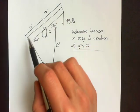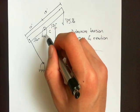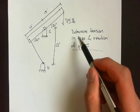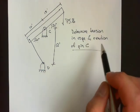Okay, so in this example, we're given this system which is composed of a beam that's supported by pin C and has a rope that's attached to pin D, and we're asked to determine the tension in the rope and the reaction of pin C.